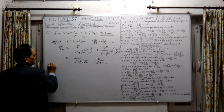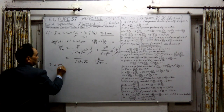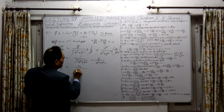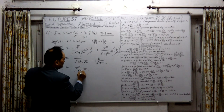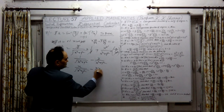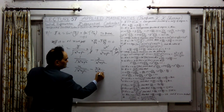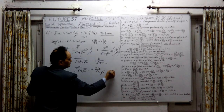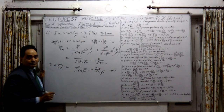Therefore, this implies that x into u_x is equal to x upon under root x square plus y square, minus x into y divided by x square plus y square. This is your second equation, we have obtained here.